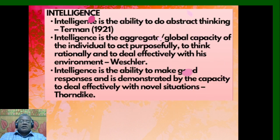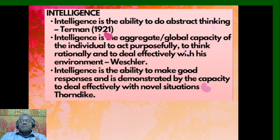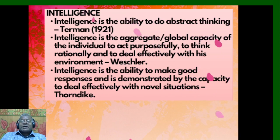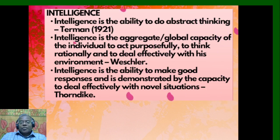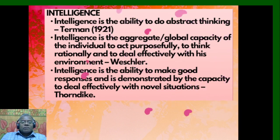Intelligence is the ability to do abstract thinking, according to Thurmond (1921). According to Wechsler, intelligence is the aggregate or global capacity of the individual to act purposefully, to think rationally, and to deal effectively with his environment. According to Thorndike, intelligence is the ability to make good responses and is demonstrated by the capacity to deal effectively with novel situations.